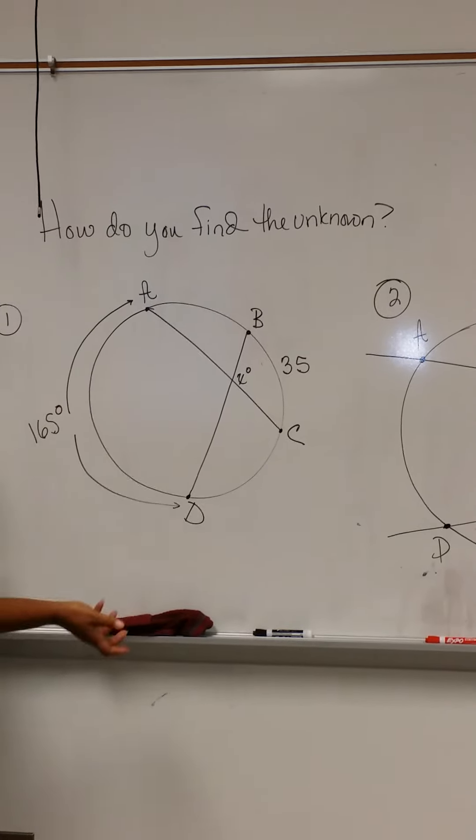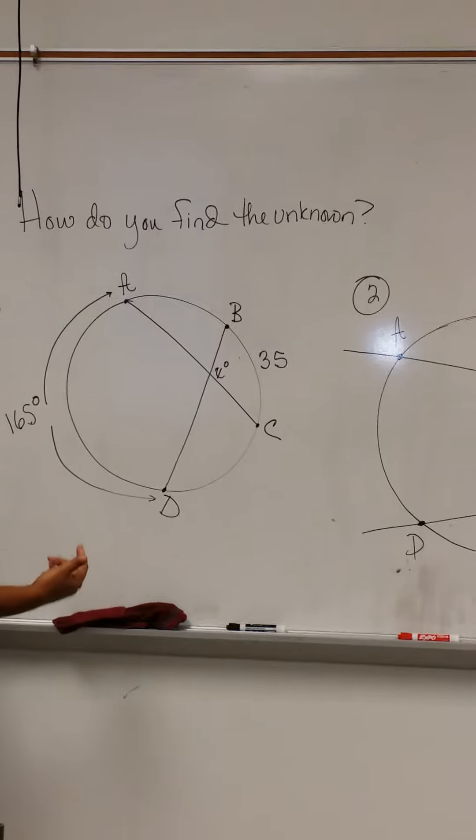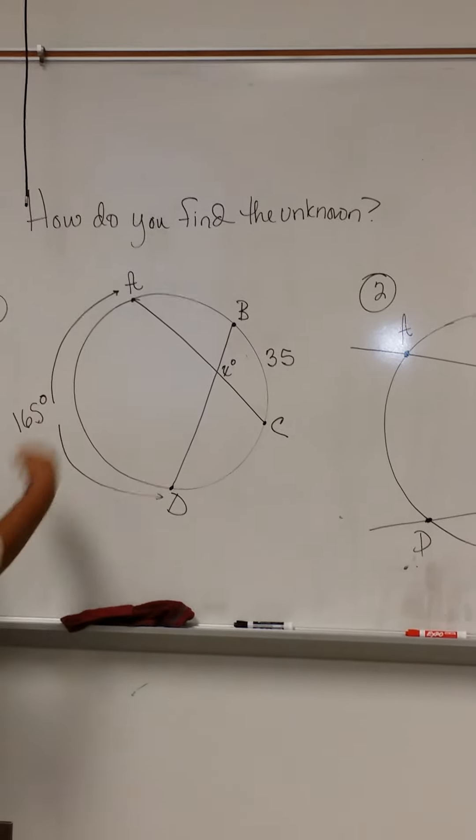It's just an angle within the circle formed by two chords. So now let's talk about how you would find this unknown.